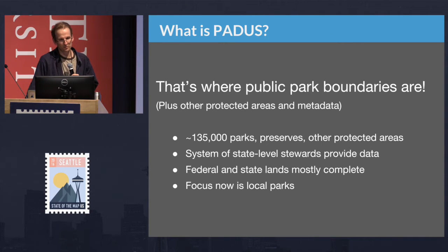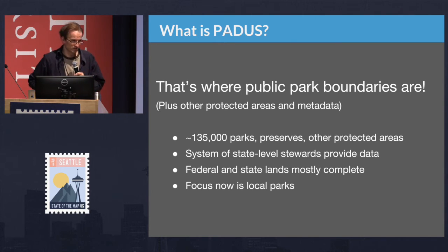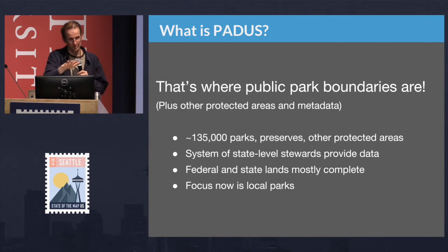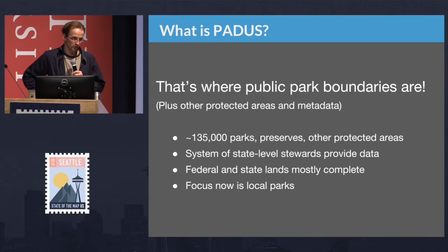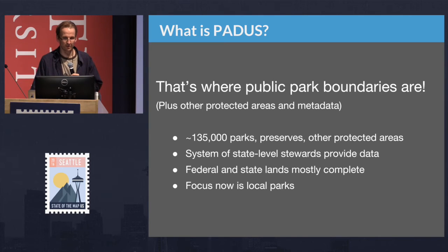PAD-US, which just came out in a new version within the last month, has about 135,000 parks, preserves, and other protected areas, plus about 50,000 designations like wilderness designations and conservation easements that restrict use for conservation. Folks working on collecting public lands boundaries using PAD-US as a starting point — that's a great idea.